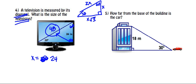Here, they give us a 30° angle and a right angle, making the third angle 60°. It wants to know how far from the base of the building is the car. They give us the side across from the 30°, so x = 18. The distance from the right angle to the 30° is always x√3, and we already know x, so it's going to be 18√3 units.